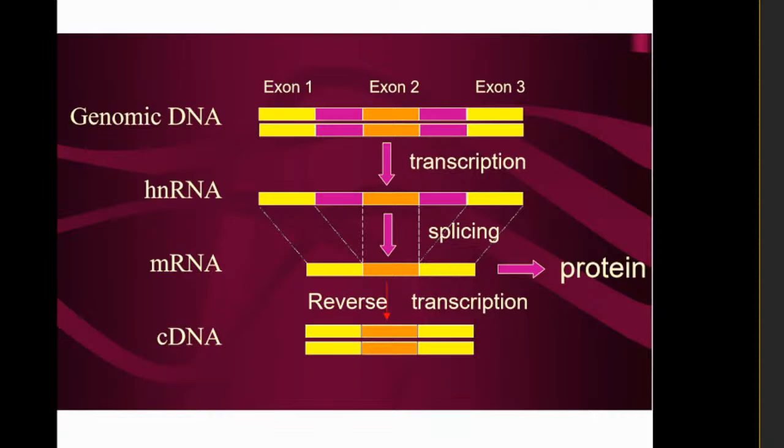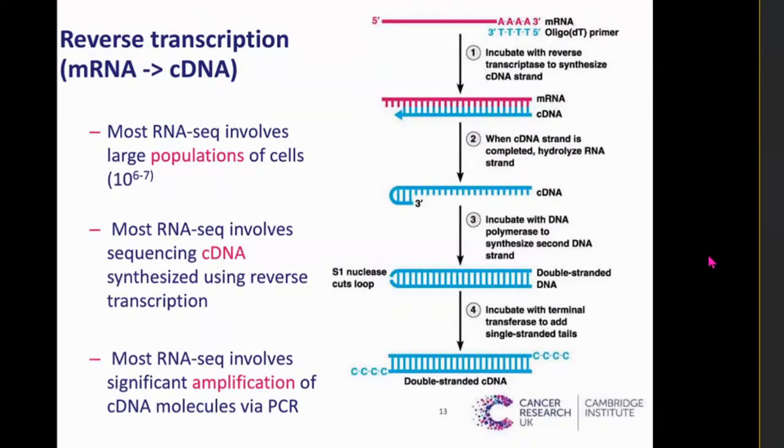In RT-PCR for COVID-19 detection: first, samples are received from the patient, DNA is isolated, then the mRNA sequence of the virus is isolated and complementary DNA is developed. After developing cDNA, a PCR reaction is performed. After sequencing the accumulated sample, they determine whether the patient is infected with coronavirus or not.